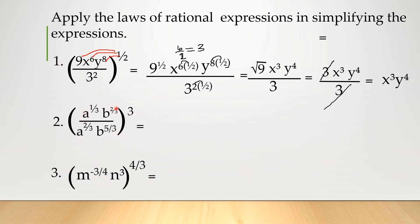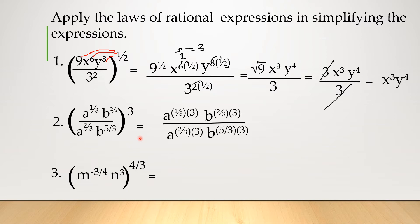That means we distribute: multiply all the inside exponents by the outside exponent. First for a: 1 third times 3. For b: 2 thirds times 3. So for a: 1 times 3 is 3, divided by 3, that is 1 — so we just have a. For b: 2 times 3 is 6, divided by 3, that is 2. That's why we have b squared.